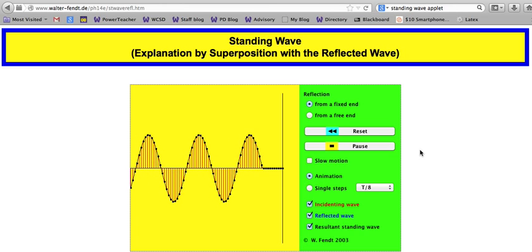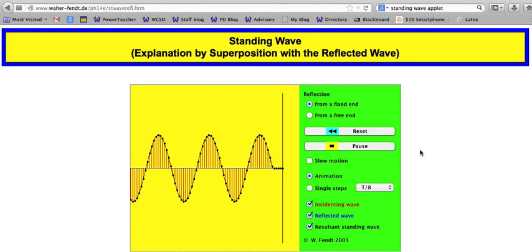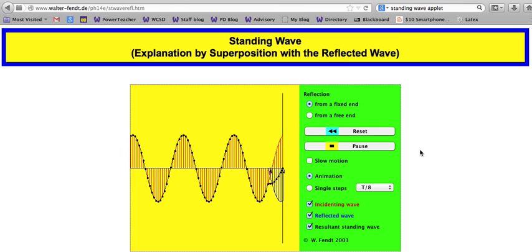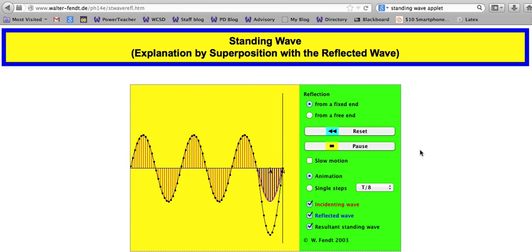This animation is going to show what happens when a wave encounters a fixed barrier. We know that wave gets reflected and inverted from a fixed barrier.